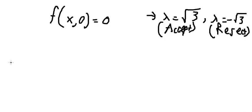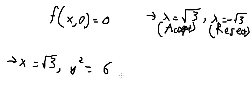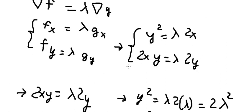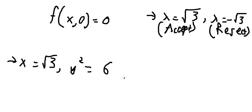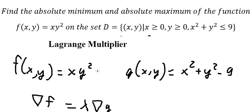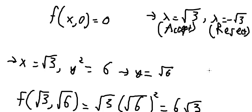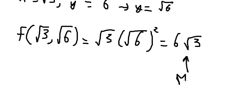So we have x equals square root of 3. Substituting into the constraint gives y squared equals 6, and since we accept y greater than or equal to 0, we have one value. Substituting into the function gives 6 times square root of 3. From our results, one critical point is the minimum and the other is the maximum. This is the end — thank you for watching.